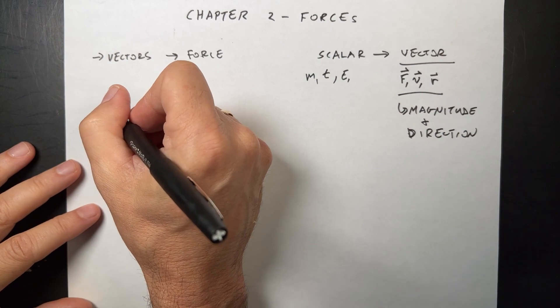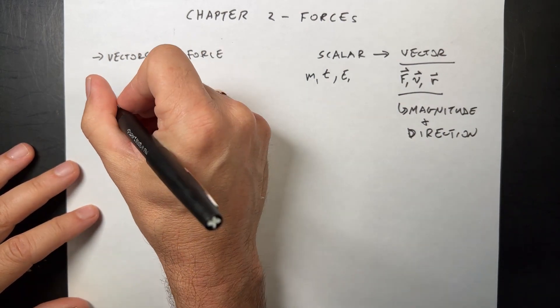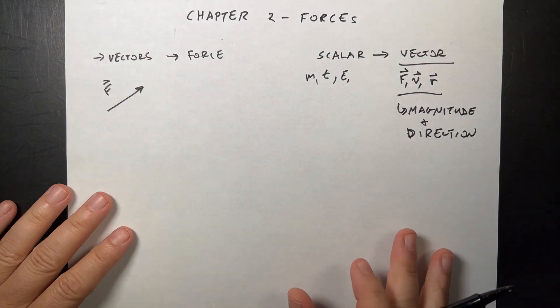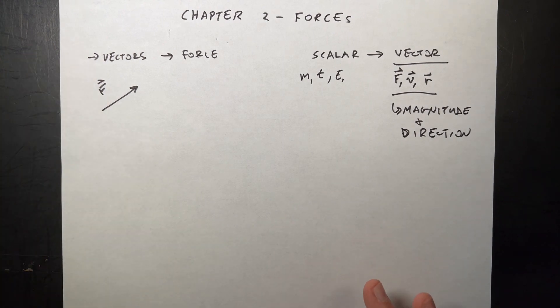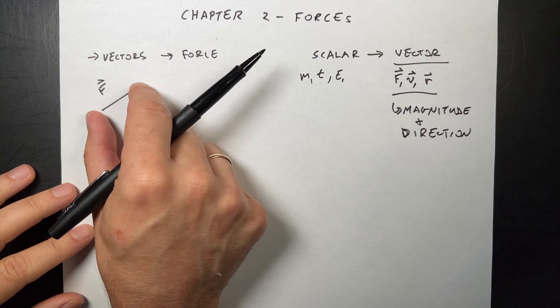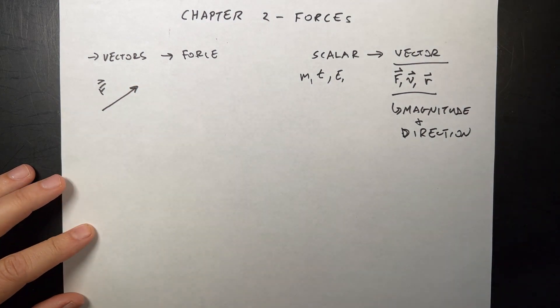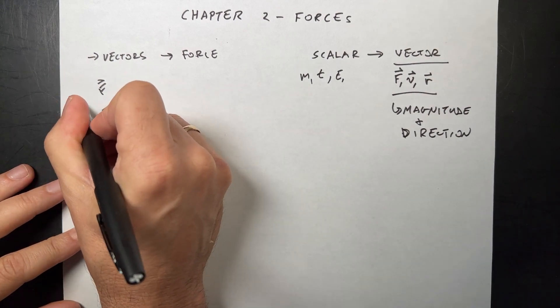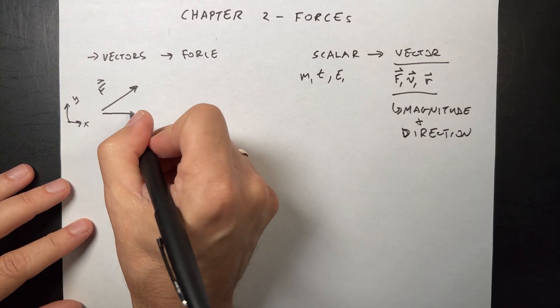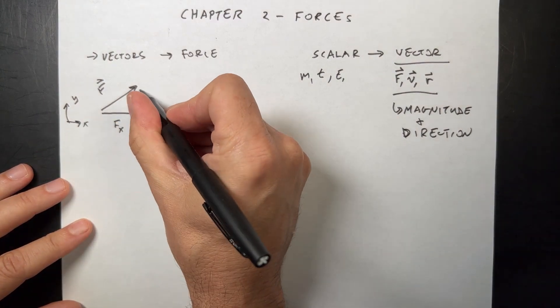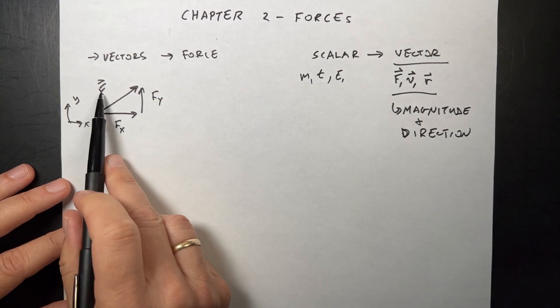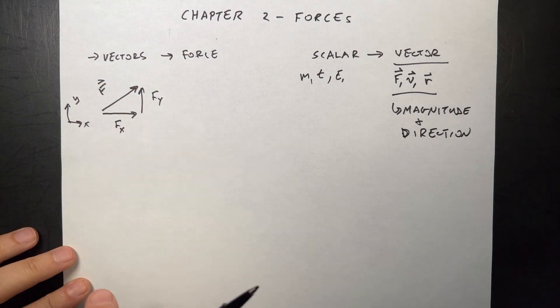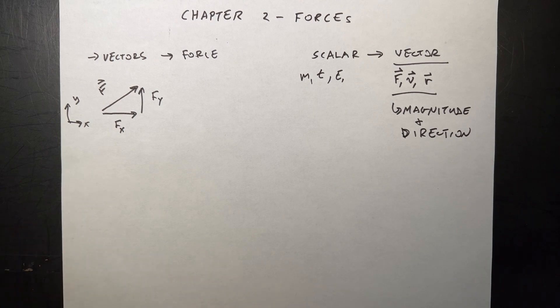You could represent a vector as an arrow. So let's call this the force arrow. It does have magnitude and direction in two dimensions - it can be a three-dimensional vector. In this case, the length and direction matter. But really, if I call this my x and y direction, I can represent this as two pieces of information: Fx and Fy.